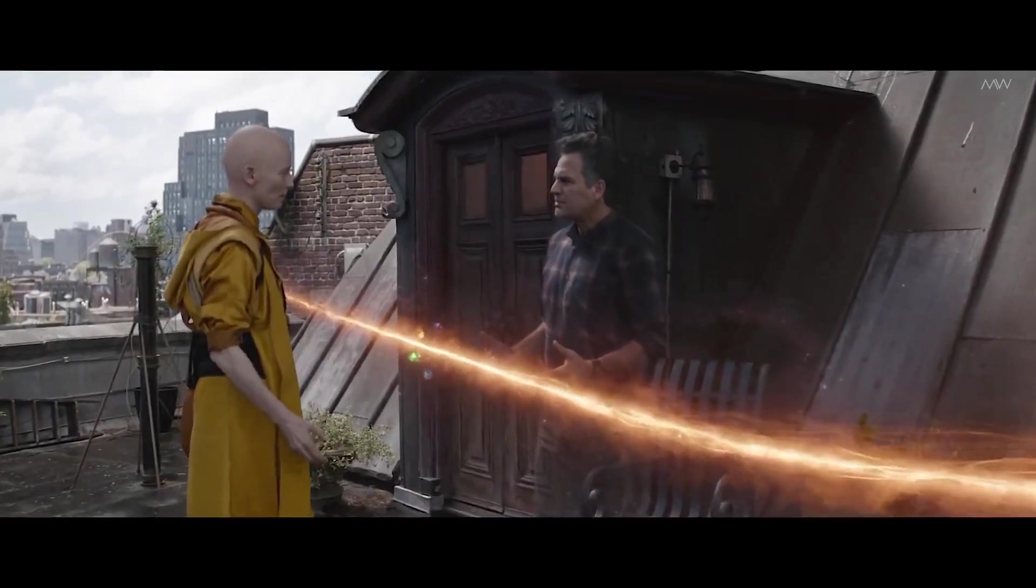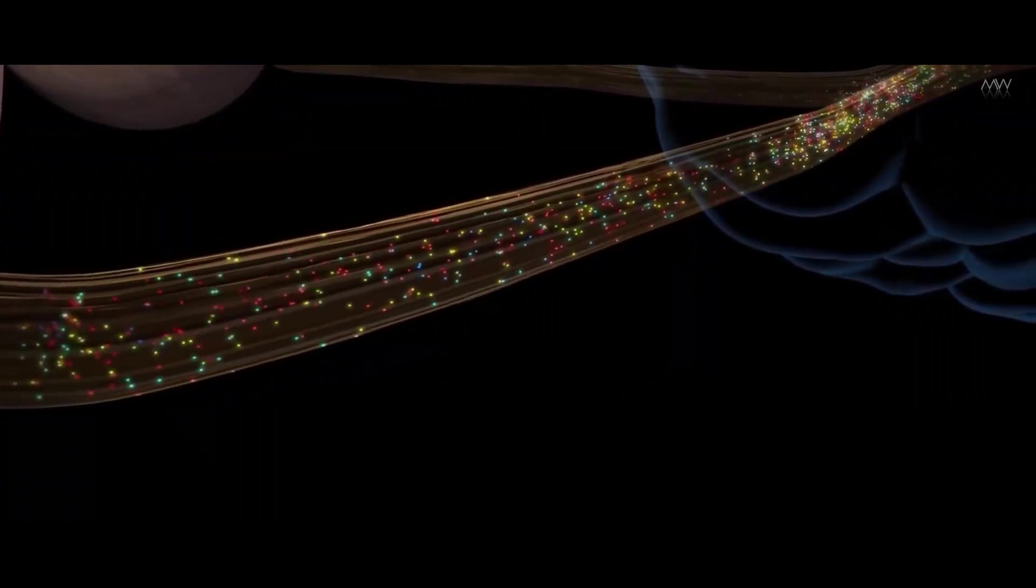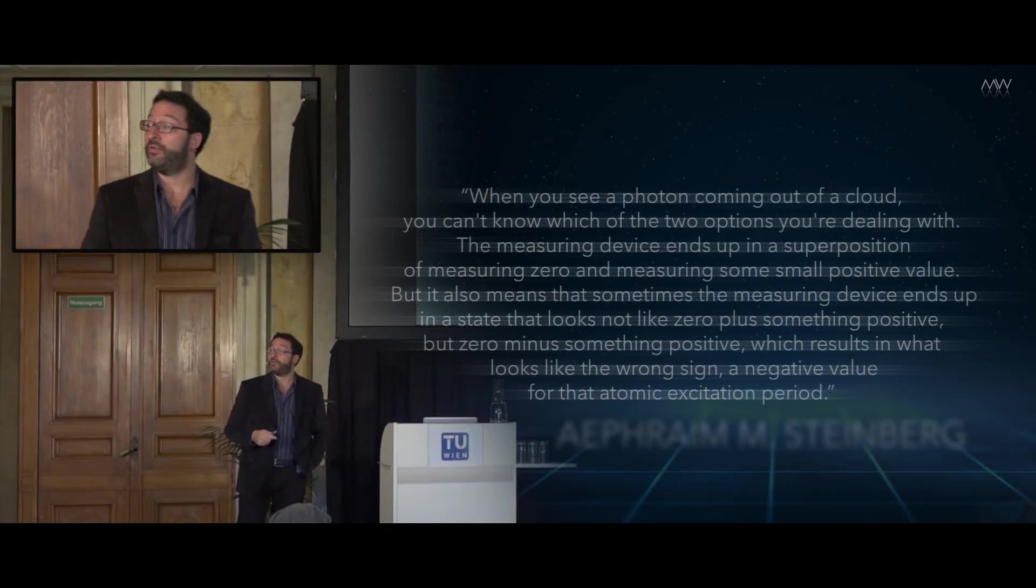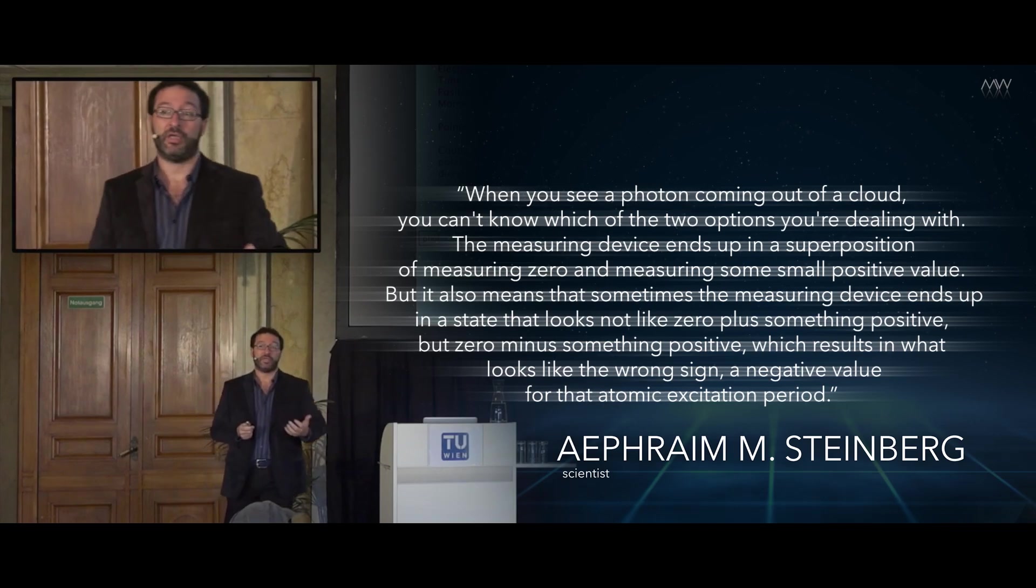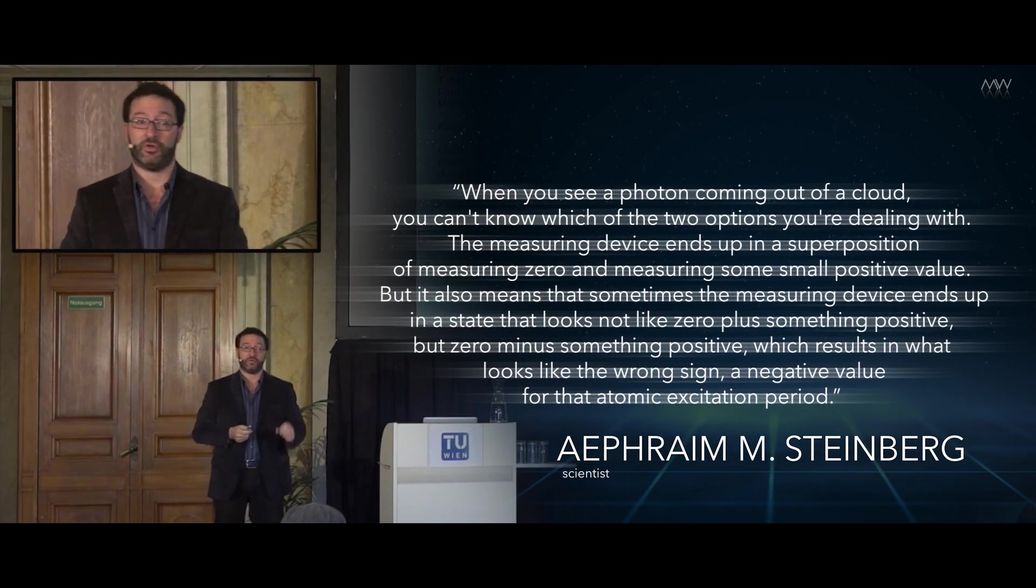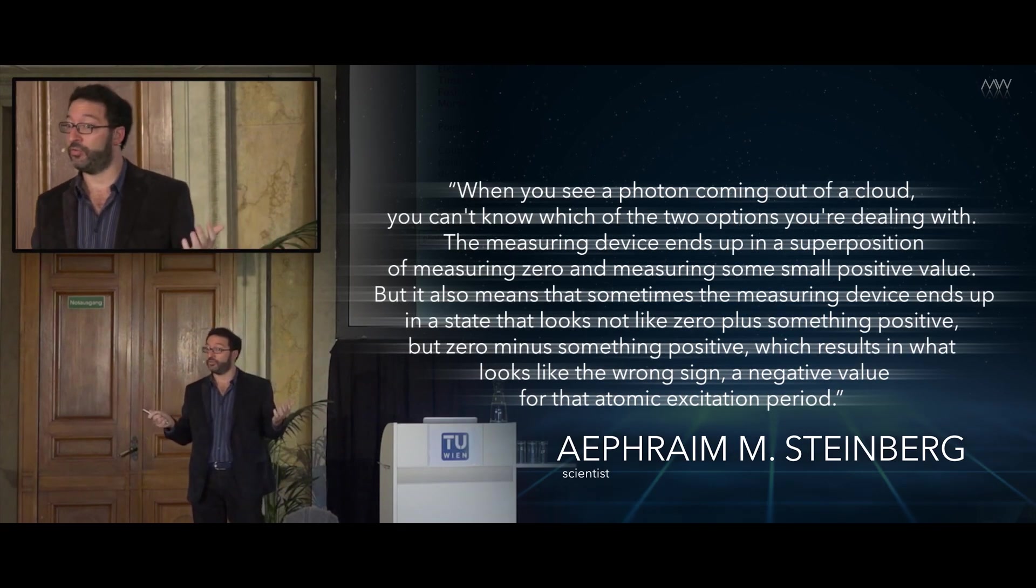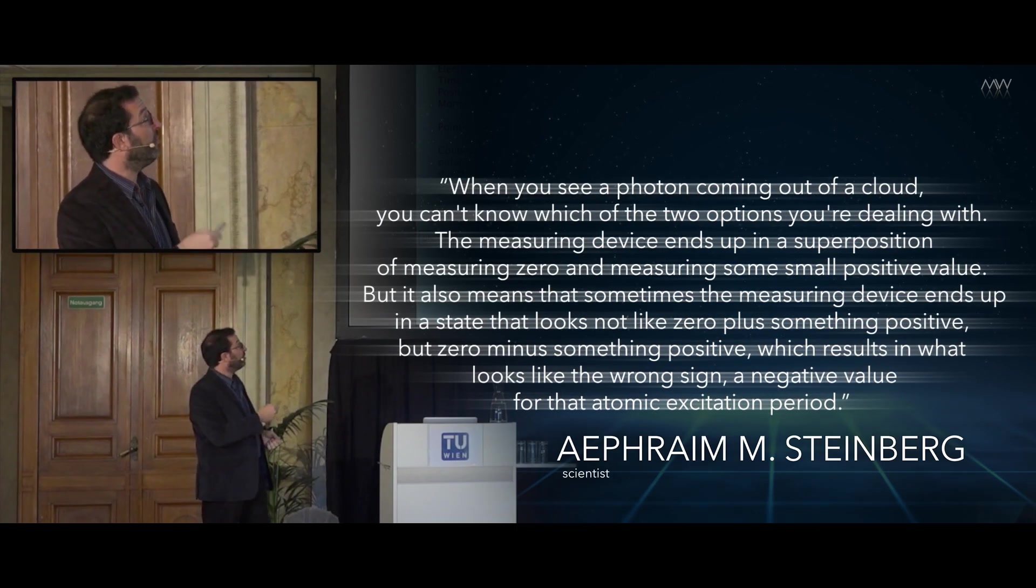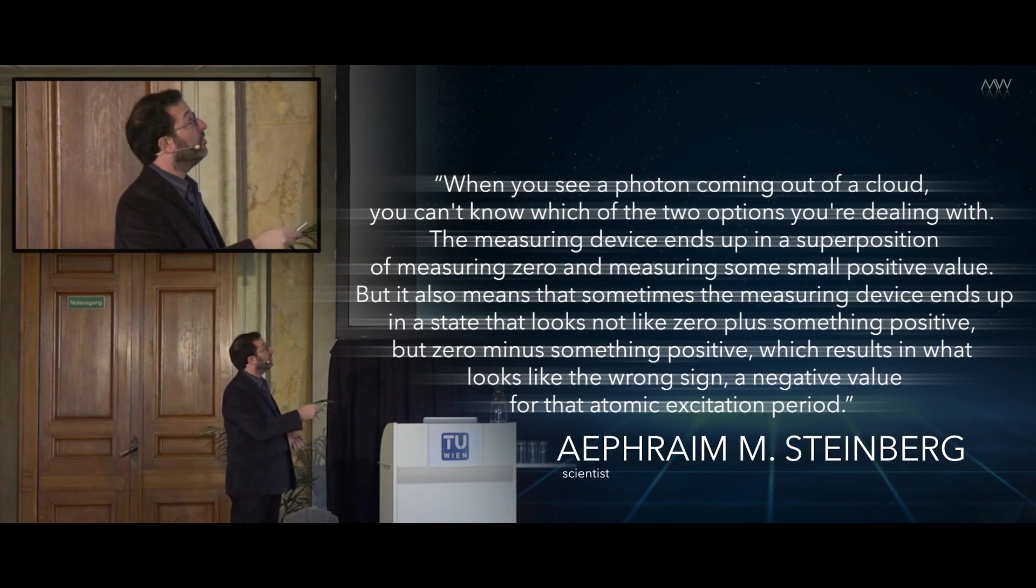Here's what they saw. There are two ways a photon can travel through the atomic cloud. In the first, it slaps on metaphorical blinders and ignores everything, just zips through, not even noticing the atoms. In the other case, the photon interacts with the atom. And here's a very subtle point which the researchers themselves are well aware of. Team leader Steinberg explains: when you see a photon coming out of a cloud, you can't know which of the two options you're dealing with. The measuring device ends up in a superposition of measuring zero and measuring some small positive value. But it also means that sometimes the measuring device ends up in a state that looks not like zero plus something positive, but zero minus something positive, which results in what looks like the wrong sign - a negative value for that atomic excitation period.